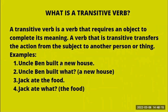The first example: 'Uncle Ben built a house.' The verb here is 'built.' If you say 'Uncle Ben built' without an object, it raises a natural question — built what? It creates a gap. The object here is 'a new house,' which is a noun phrase.